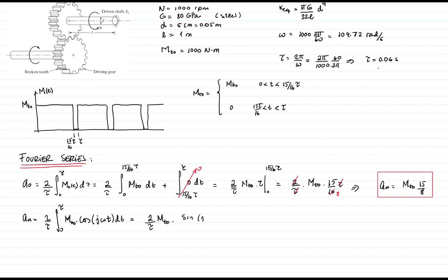The integral of cosine is sine(j ω t)/(j ω). And I have to evaluate that at 0 and 15/16 τ. I'll have 2/(τ j ω) mₜ times sine(j ω × 15/16 τ), and that's the value of my coefficient.